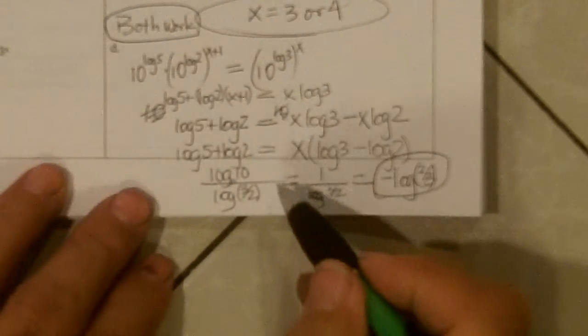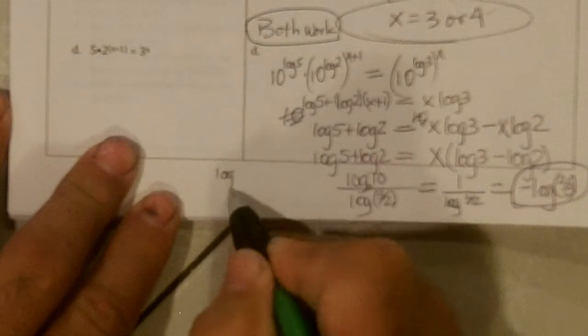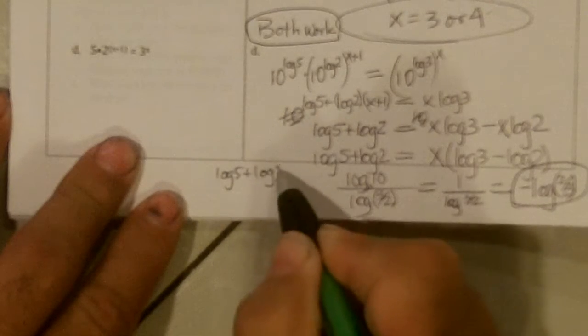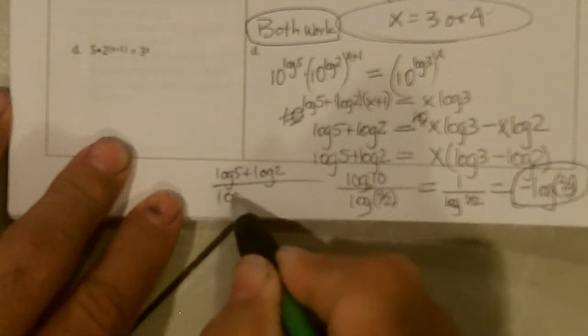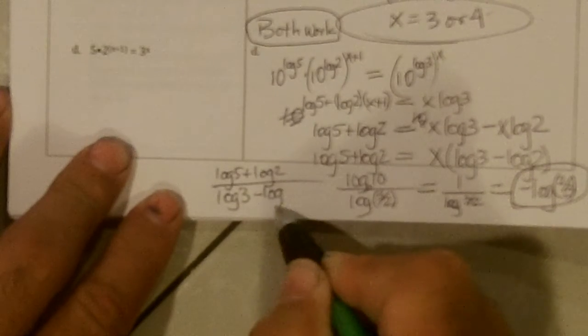But you could have left it over here, log 5 plus log 2 divided by log 3 minus log 2.